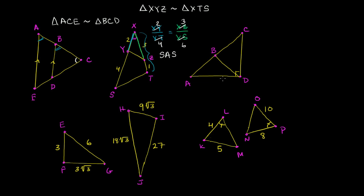Now let's look at this one. In our larger triangle we have a right angle here. But we really know nothing about what's going on with any of these smaller triangles in terms of their actual angles. Even though this looks like a right angle, we cannot assume it. The smaller triangle shares one side with the larger triangle — but that's not enough. So we really can't make any statement about similarity here. If they had told us this definitely was a right angle, then we could make some interesting statements about similarity. But right now we can't.